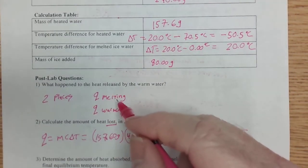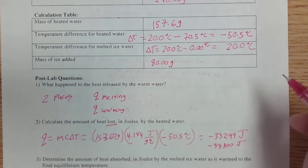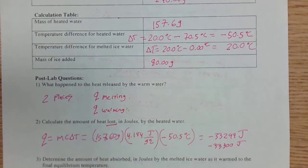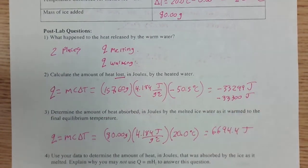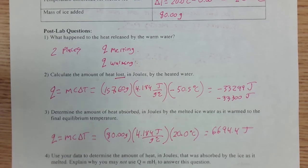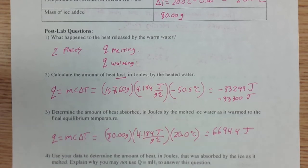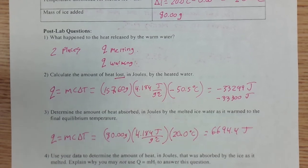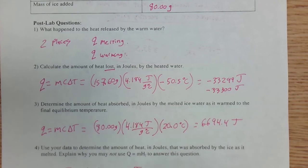Now, up here, we said that the amount of heat lost went into two things, melting the water and warming the water. And I just calculated what warming the water was. So I can take my answer here. 33,300 joules equals x, which would be the amount of heat that goes into the melting, plus the amount of heat that goes into the warming, which is 6,694.4 joules.